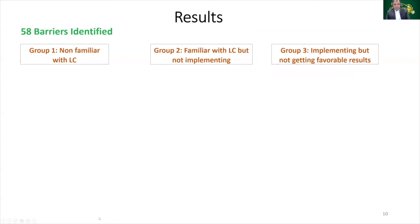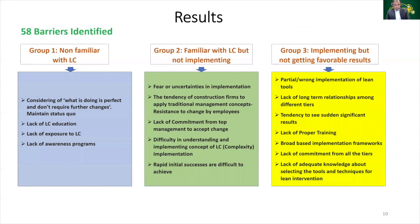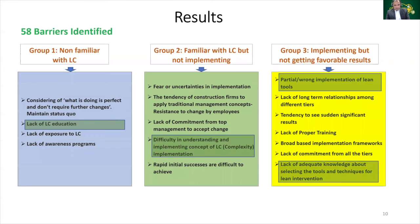58 barriers were identified which are preventing these groups to use lean construction. Although the list is very long, some of the barriers are shown in this slide. In almost all the groups, it was identified that the major barriers are actually associated with the lack of knowledge and understanding about the lean tools and techniques, considering them as very complex and confusing.